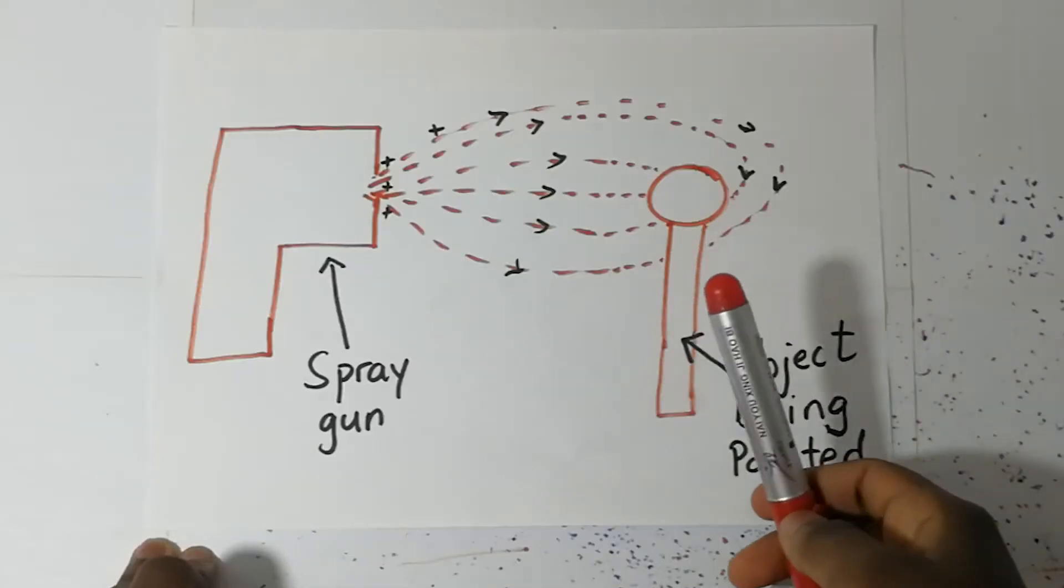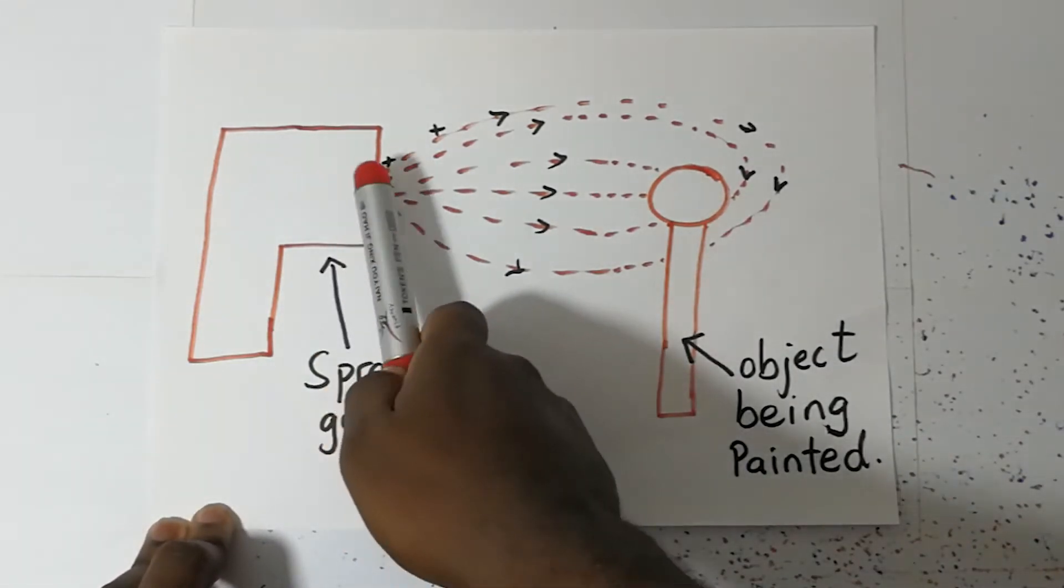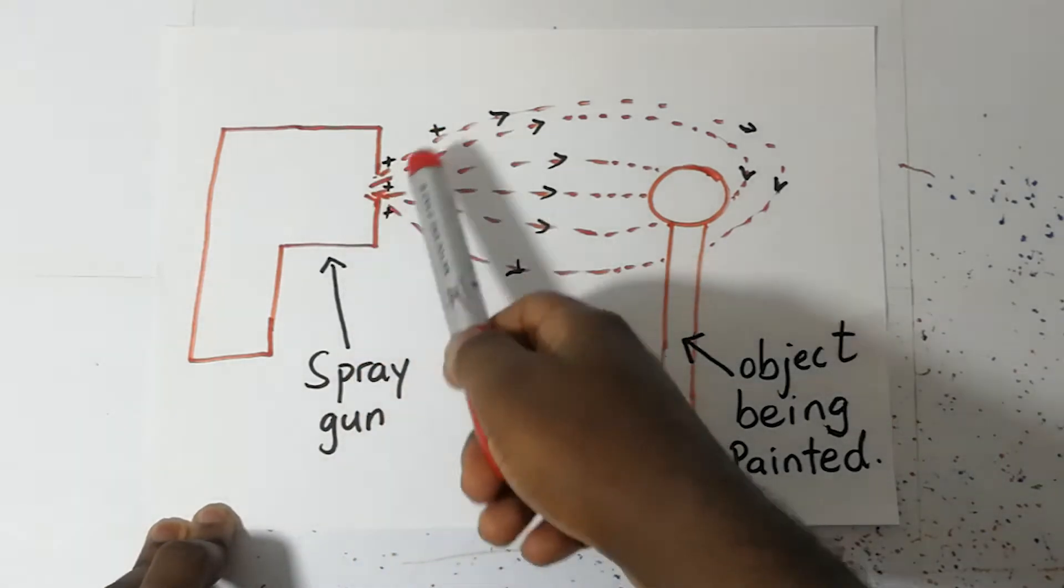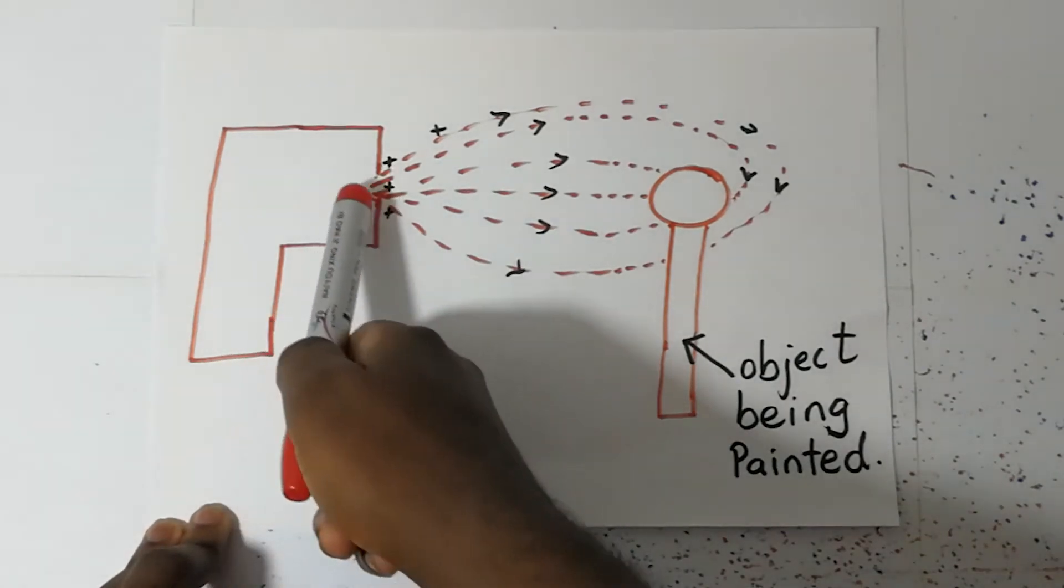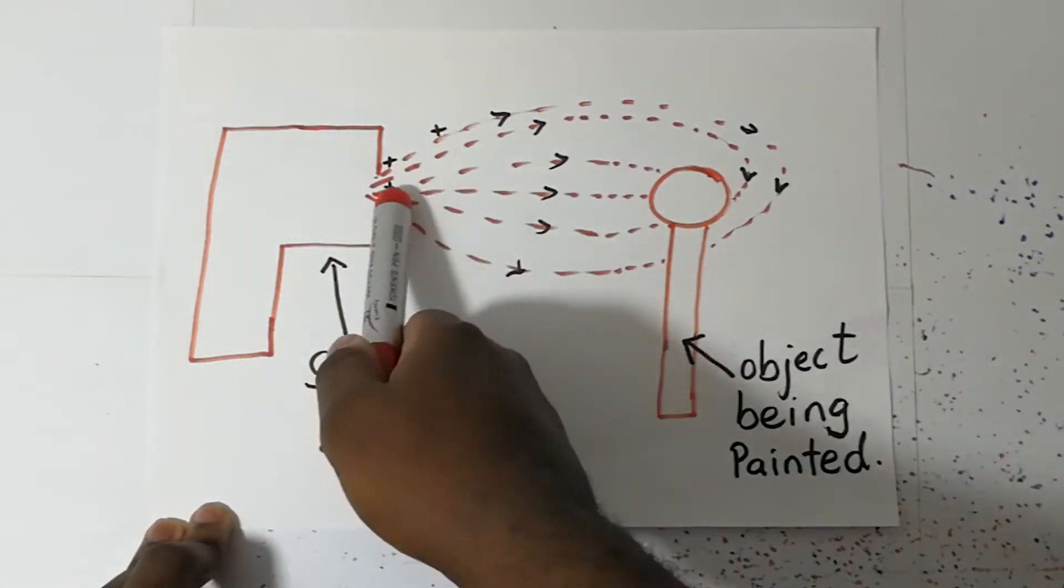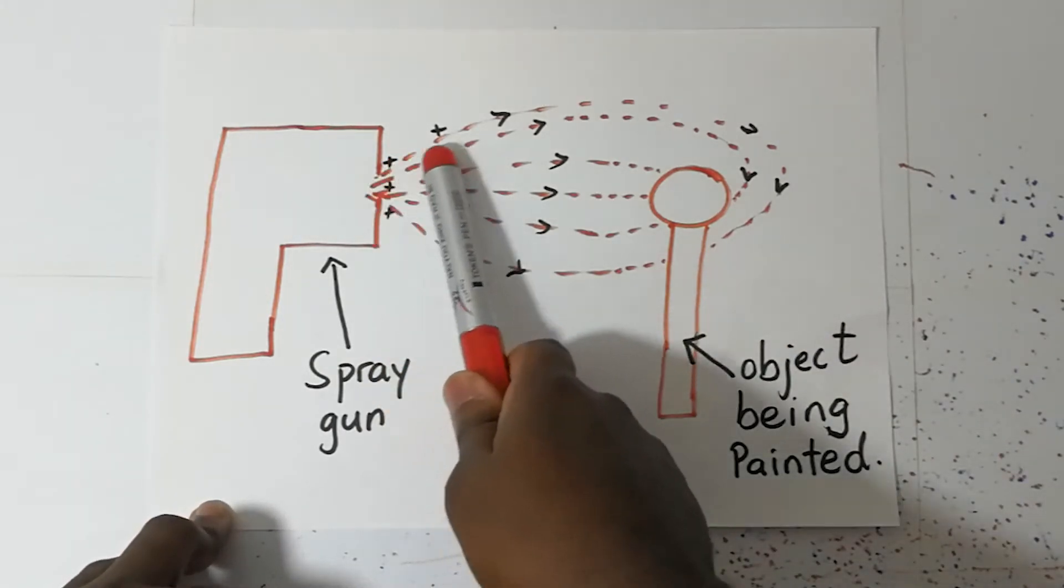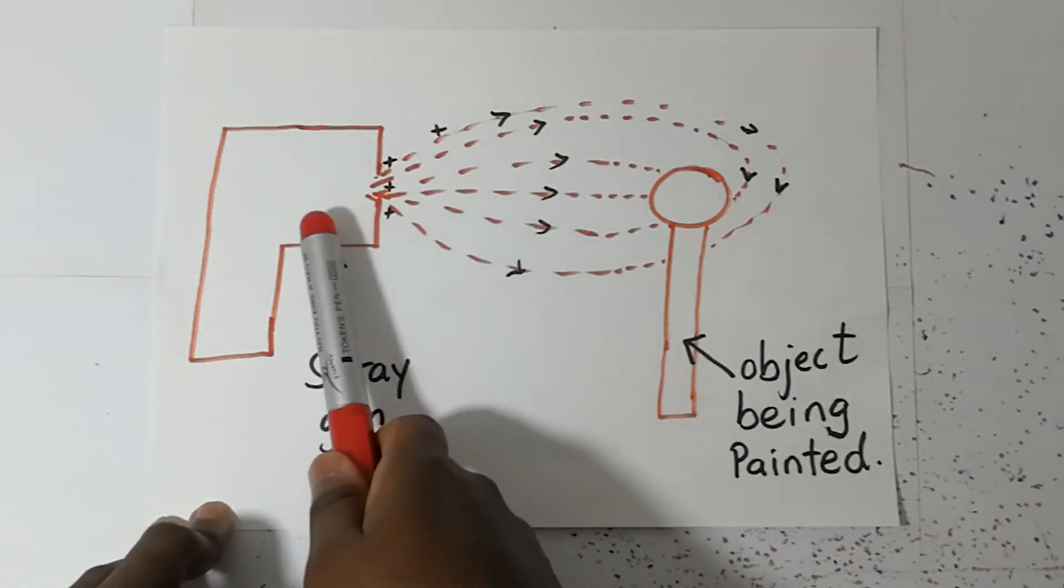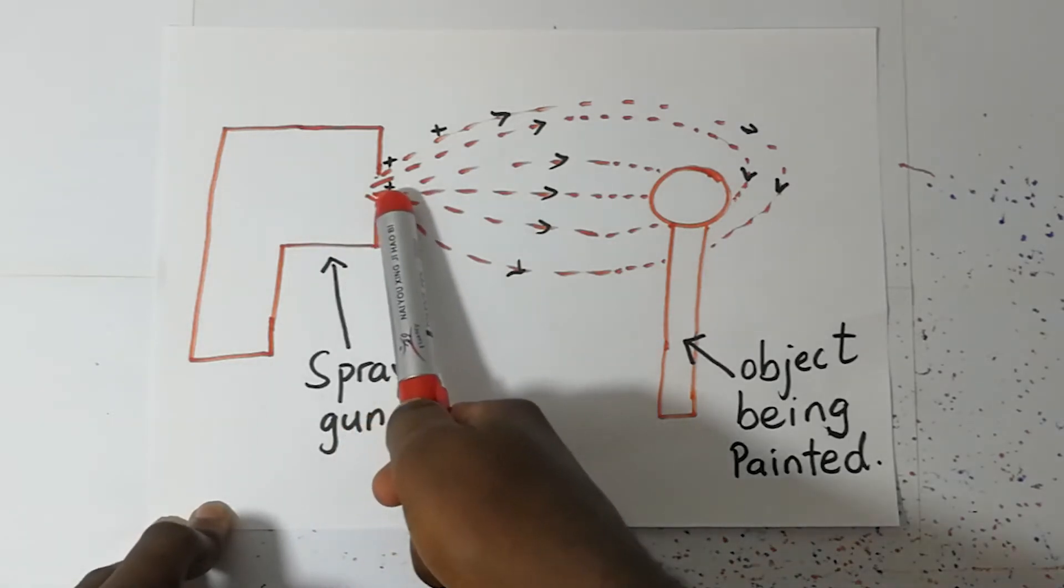At the outlet of this spray gun is an atomizer. As the paint comes through here, it ensures that as it's moving out it is atomized. As this paint is atomized and moves out of the spray gun, it is charged by friction.